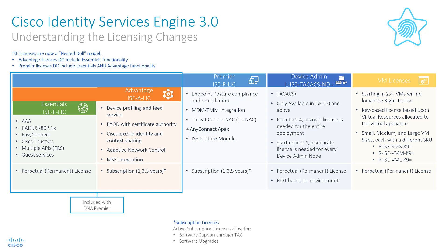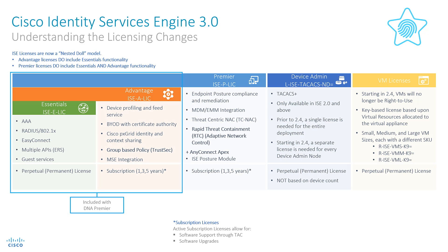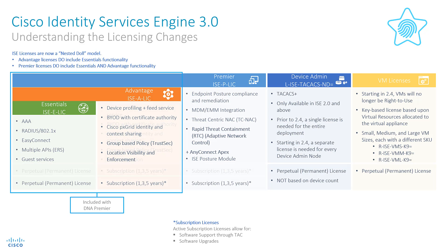Due to some of these changes and alignments, some features have either been renamed or moved. Cisco TrustSec and Adaptive Network Control have both moved up a tier and changed names. TrustSec is now in the Advantage tier and is named Group Based Policy, while Adaptive Network Control is in the Premier tier and named Rapid Threat Containment. MSC integration has been given the proper name of Location Visibility and Enforcement, which makes sense since MSC is end of life.